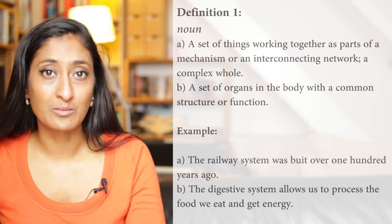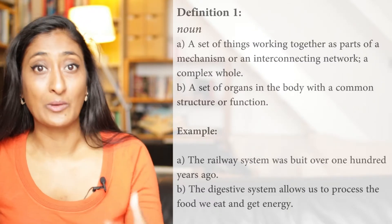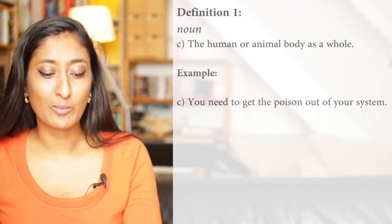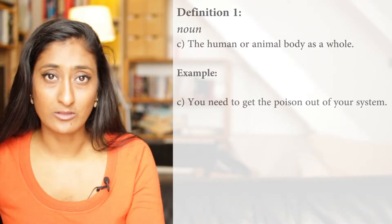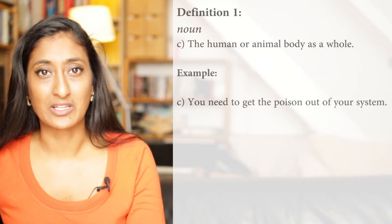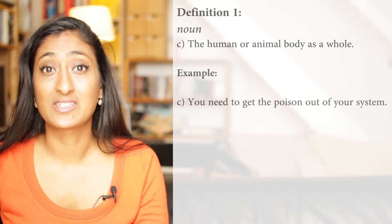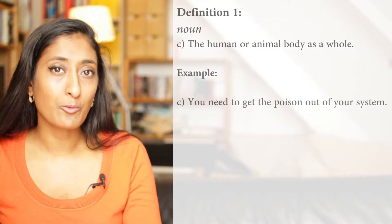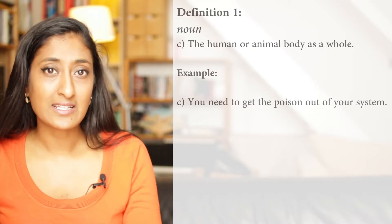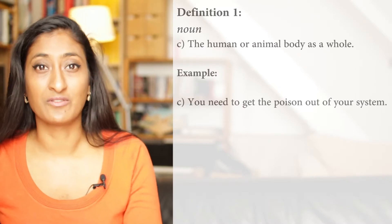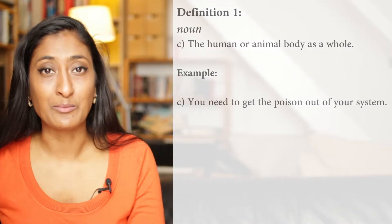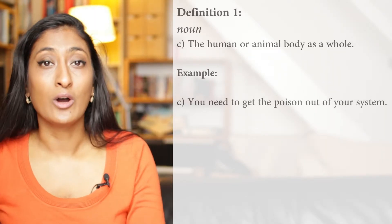The third way the word system can be used as part of this umbrella definition is when you talk about the human or animal body as a whole. This is similar to the last definition but a little bit different. Here's an example to illustrate the point: you need to get the poison out of your system. Now we're not talking about little networks of things working together — the word system here just refers to your body. For instance, if somebody ate something poisonous and needed to flush it out of their system by drinking a lot of water.